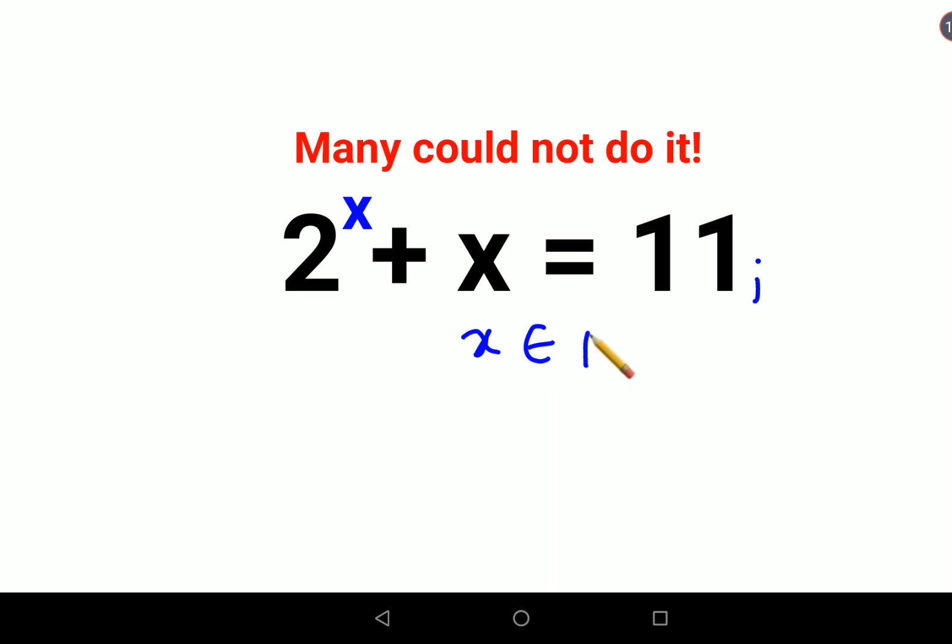x belongs to natural numbers. So here in this scenario, we know that it doesn't have a decimal point, it is a proper number. Plus we also know that this is a positive number. So now when you know all of this, what we do is we will try to put the values of x directly.